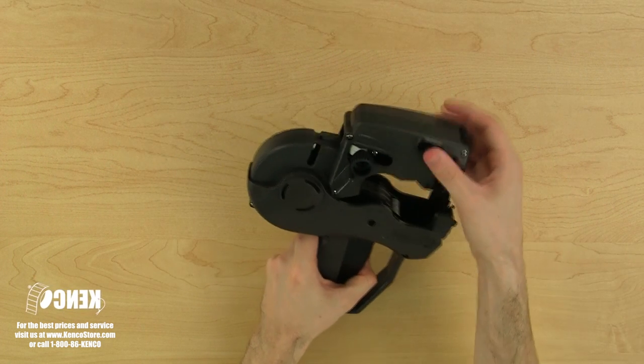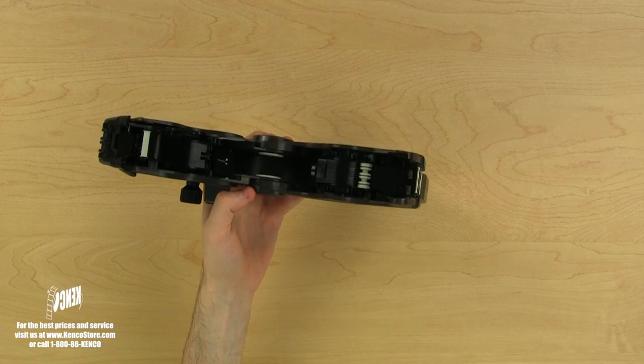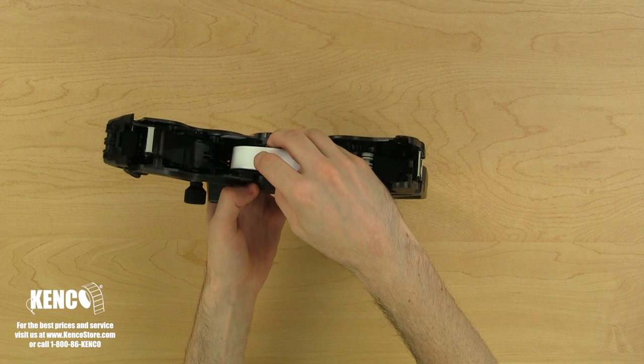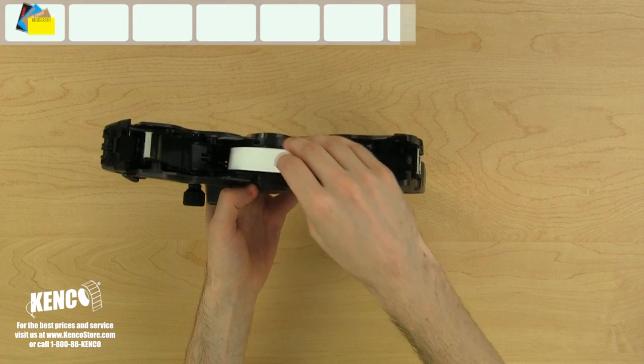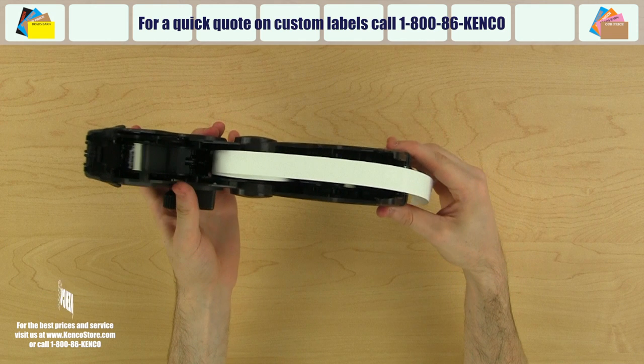Let's start by opening up the label housing cover. Let's grab a roll of labels and place it in the label cavity so that the labels are winding from the back and over the top of the roll. These blank labels in assorted colors can be custom printed with your information and are available at Kenco.